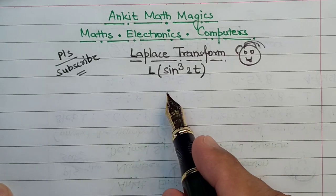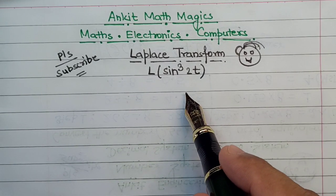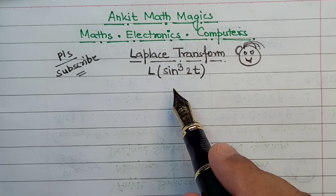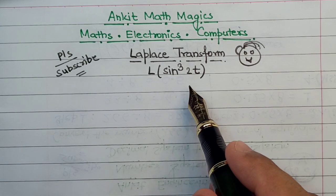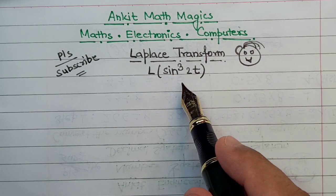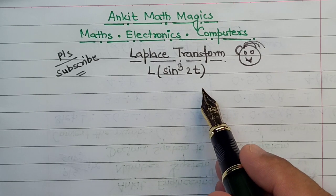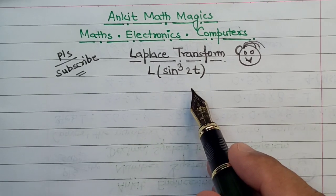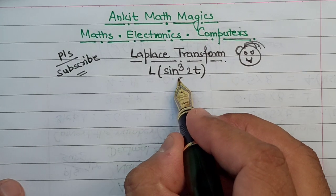Alright, so here we have sine cube of 2t. Now the main challenge that lies here is that we really do not have a direct formula that we can directly apply to the sine cube power in terms of Laplace transform. We really have to kind of break down this entire power into either sum of two different functions or a difference of two different functions, that is some kind of a plus b or a minus b kind of format.